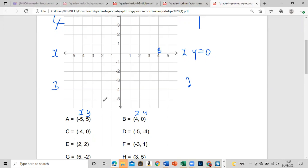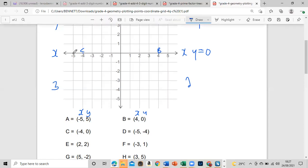Let's move on to C: negative four and y is zero, so it's right here. D is x is negative five, so we locate negative five, and then negative four, so this point will be D.